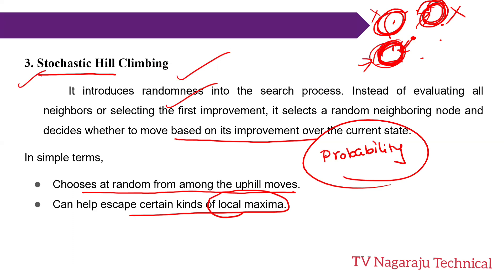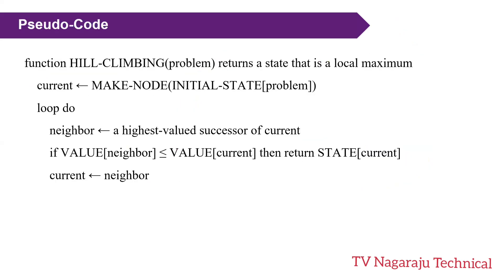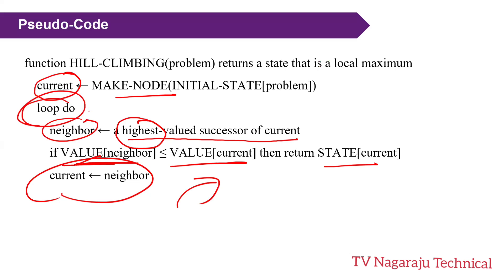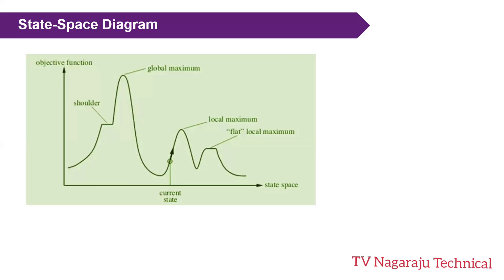Now for the pseudo code: set the initial state as the current node and identify all successors. Among these, the highest valued successor is the neighbor. If the value of the neighbor is less than or equal to the current, we stay. If the value of the neighbor is greater, we move to that node. This process repeats until we reach the maximum value.